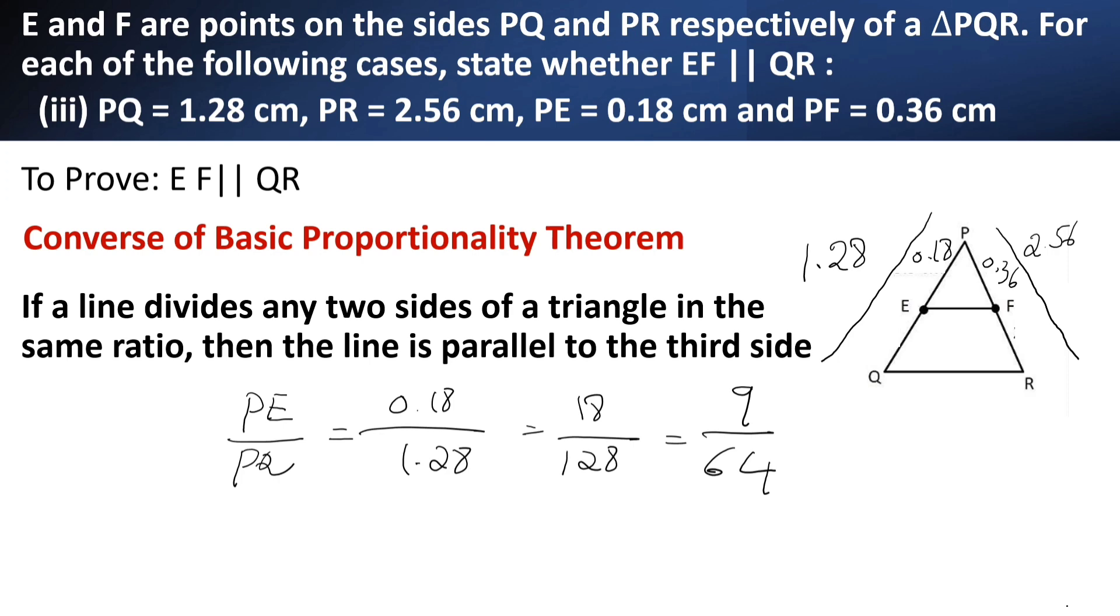Here, let us check PF by PR. What is it? 0.36 upon 2.56. So, 36 by 256. This simplifies to 9 by 64.